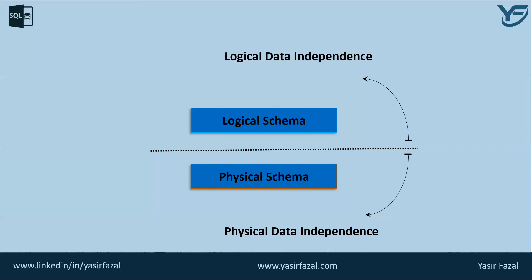Physical data independence can be defined as the capacity to change the internal schema without having to change the conceptual schema. If we do any changes in the storage size of the database system server, the conceptual structure of the database will not be affected. Physical data independence is basically used to separate the conceptual levels from the internal levels, and it occurs at the logical interface level.